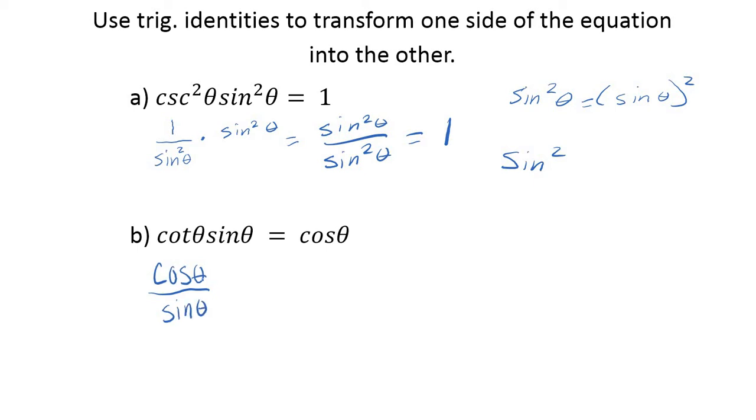So I would have cosine over sine times sine. Well, notice what happens. Sine over sine divides out. I get cosine theta.